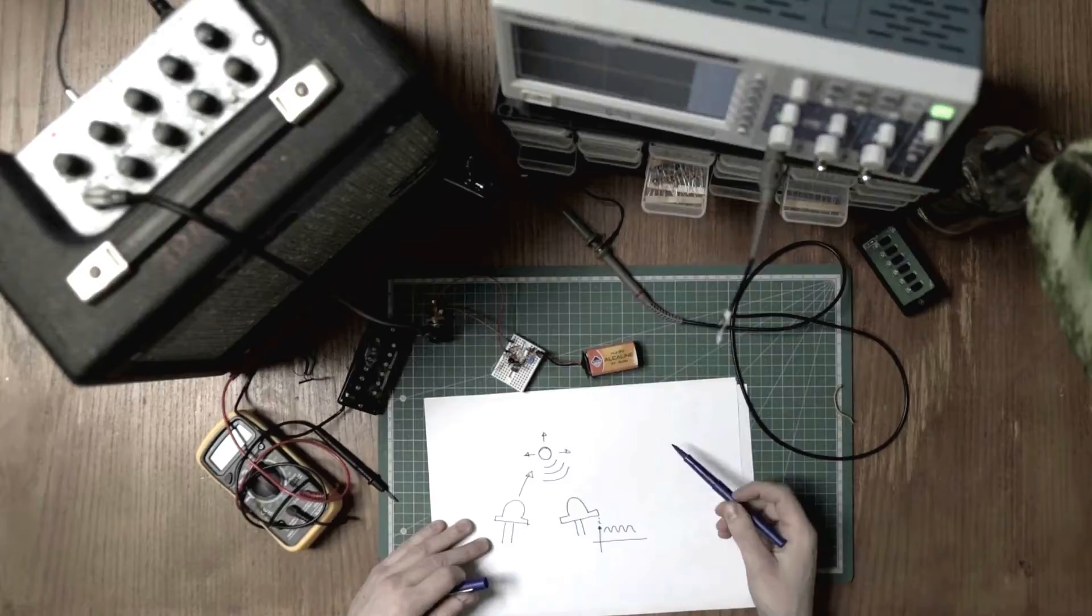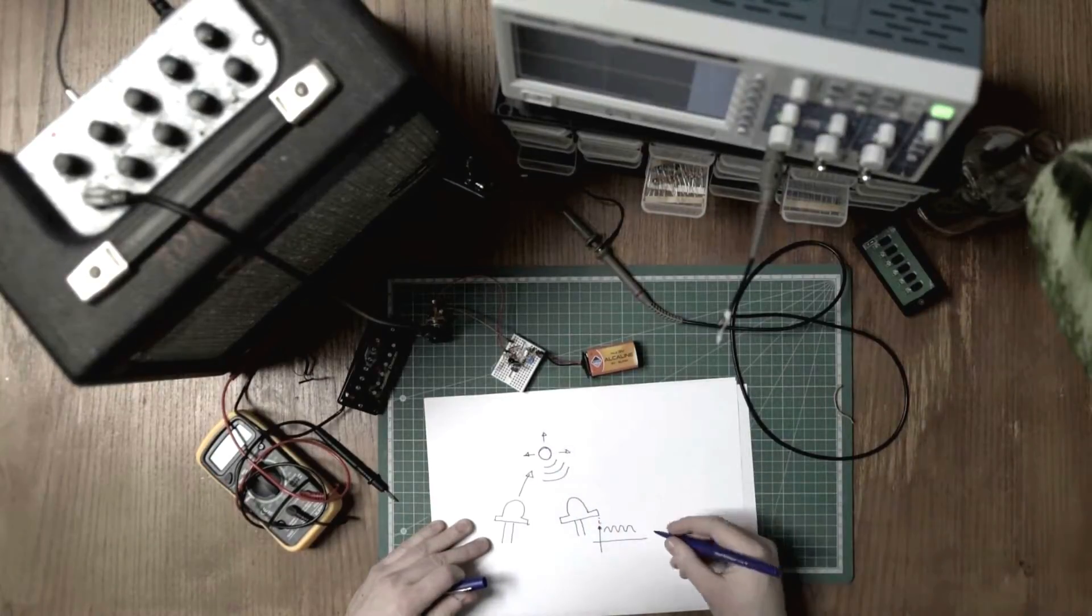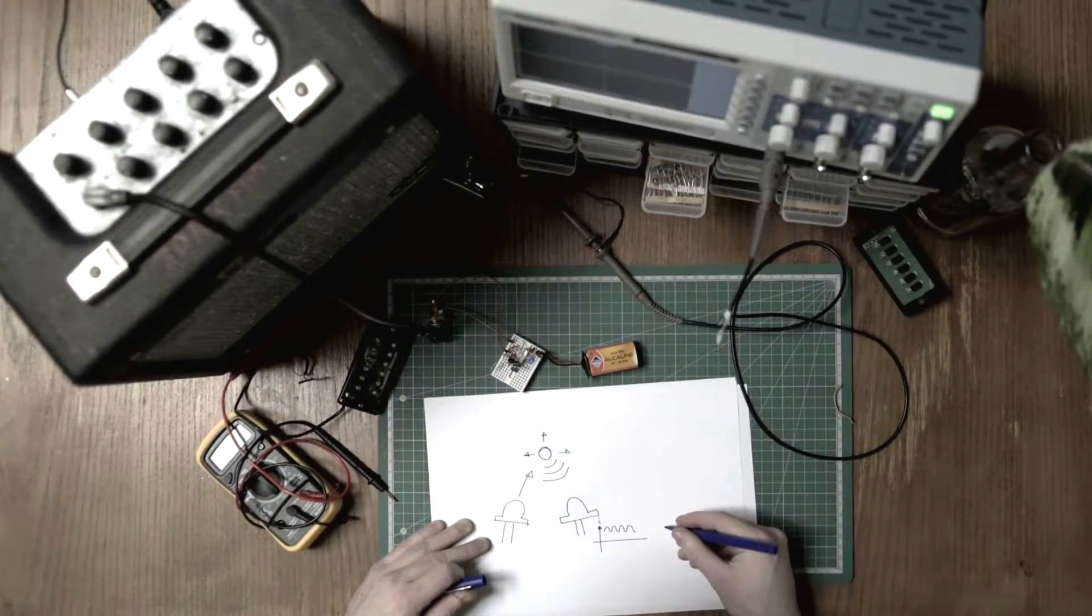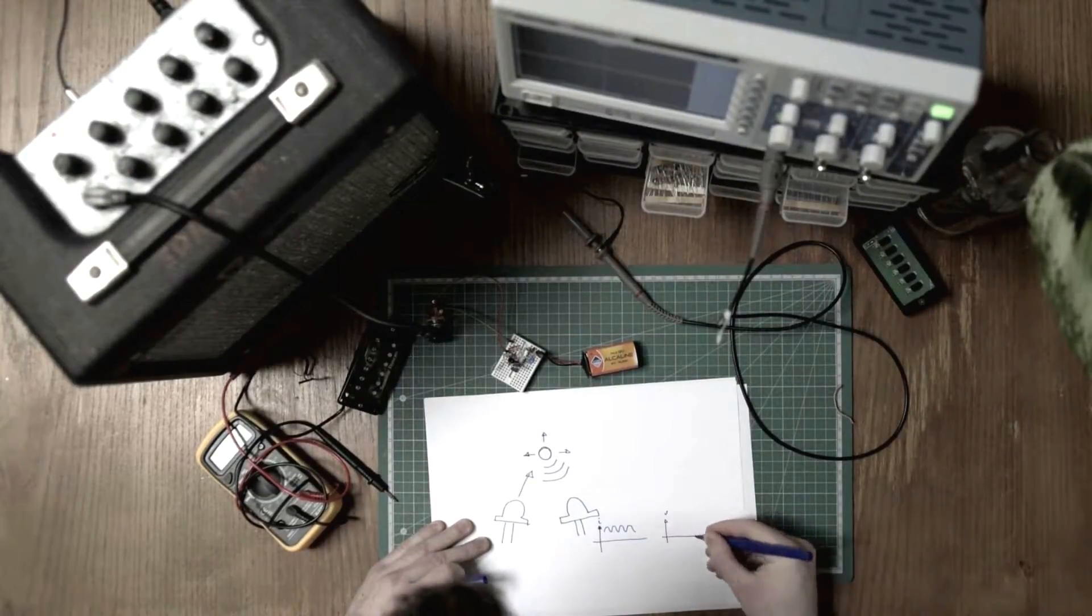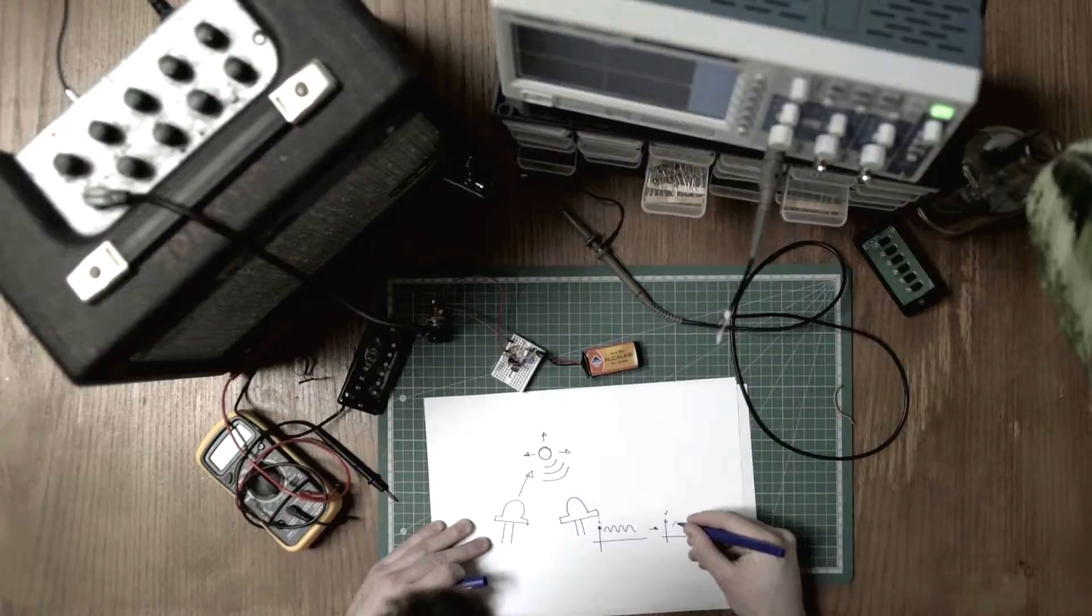What we do then is, with the help of some op-amps, we convert this intensity to a voltage that looks like this.